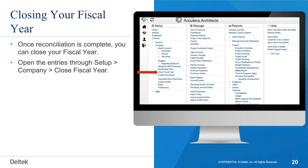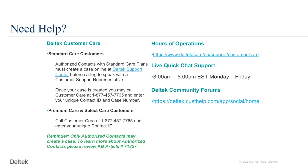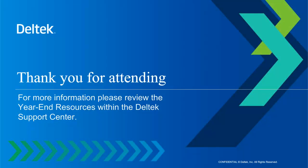Once reconciliation is complete, you can close your fiscal year. Open the entries through Setup, Company, Close Fiscal Year. Verify that your fiscal year is correct. Verify the entries are correct and click Save. Check the box for Set New Fiscal Year to the Next Year and click OK. This concludes an overview of reconciling the trial balance and control accounts and closing the year in Azira.